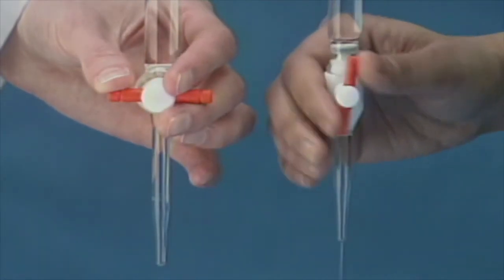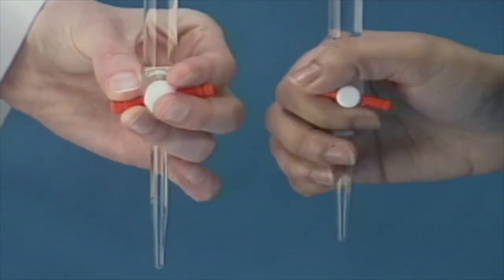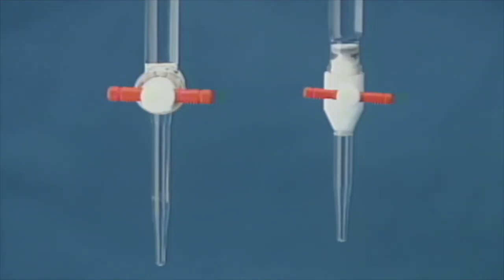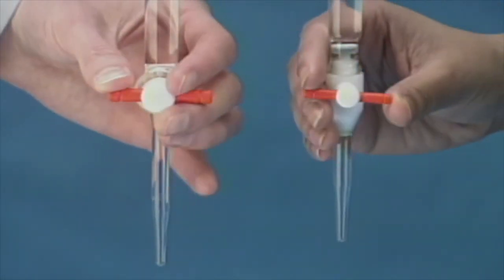On the right of the screen, we see that a quick 180 degree revolution of the stopcock delivers a very small liquid volume. On the left, we see an alternate technique, simply turning the stopcock on and off quickly.